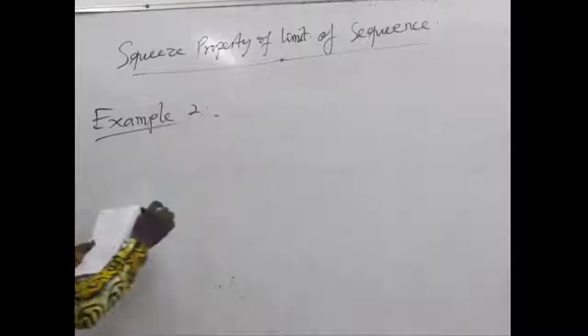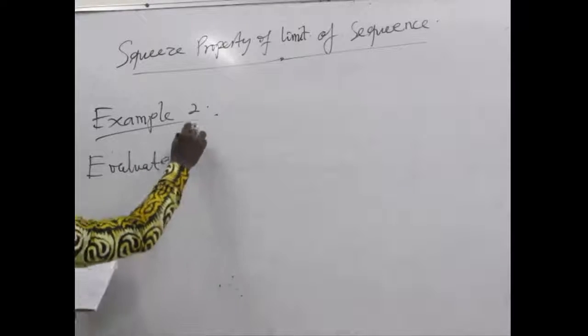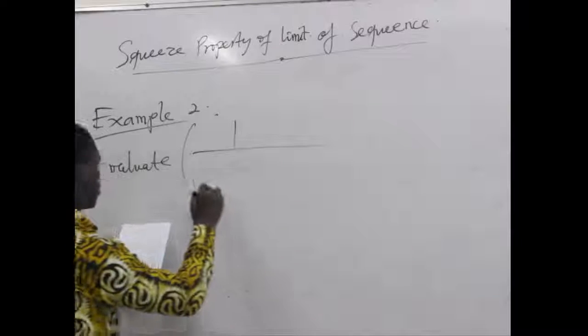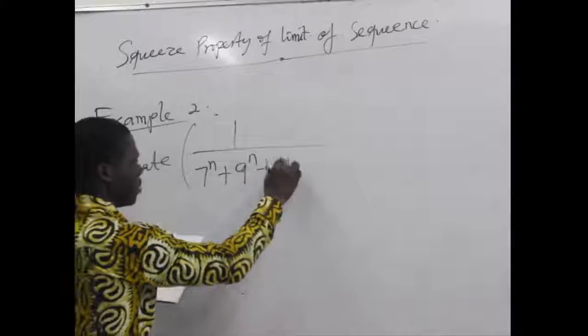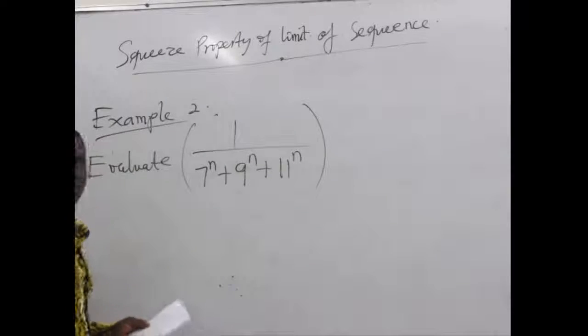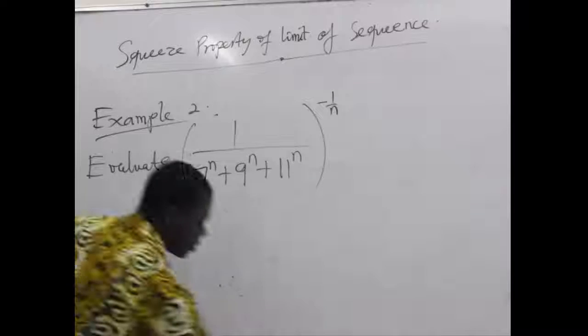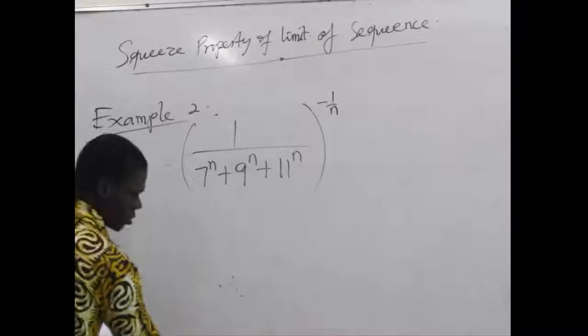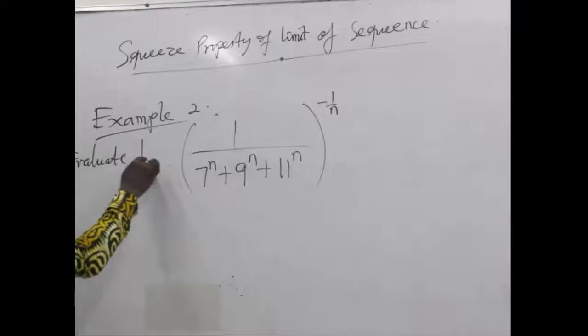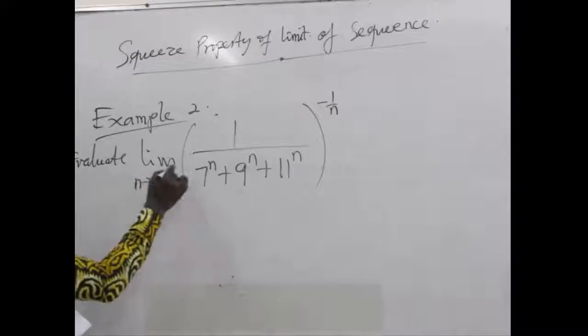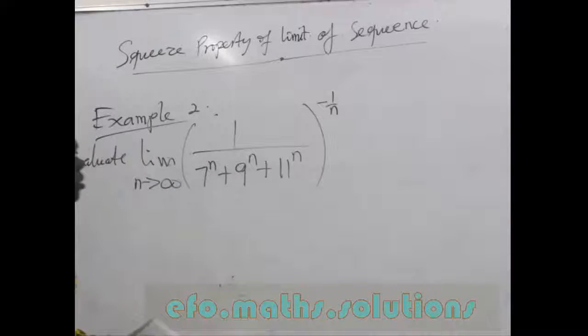We have the limit as n approaches infinity of 1 divided by (7^n + 9^n + 11^n) raised to the power negative 1 over n. We are finding the limit of that sequence. So we are evaluating the limit. Let's see how we do this.